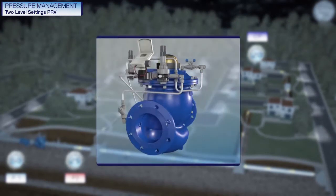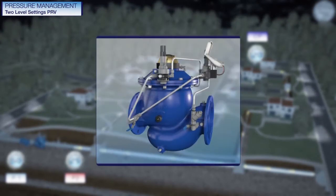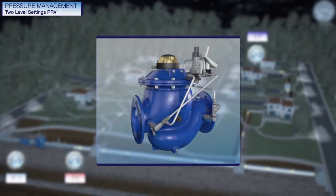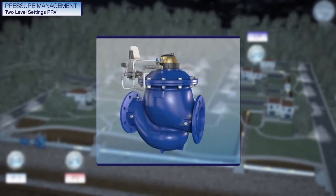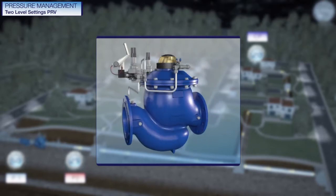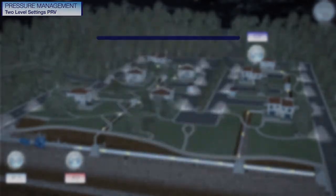Reducing the system average pressure during these low demand hours will significantly reduce water loss as a result of leakages, and reduce burst frequency in the system.